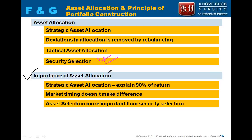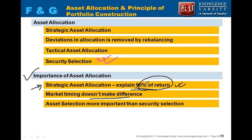Now, what is the importance of asset allocation? Historically and statistically, it has been seen that if strategic asset allocation is done properly, it is capable of explaining about 90% of the return of the portfolio. So strategic asset allocation determines 90% of portfolio return. It has also been seen that market timing — buying and selling frequently in the short term — does not make much of a difference. 90% of portfolio return is determined by strategic asset allocation.